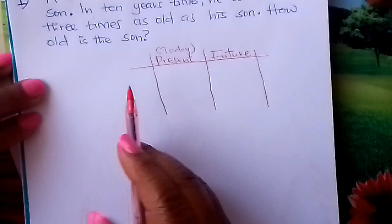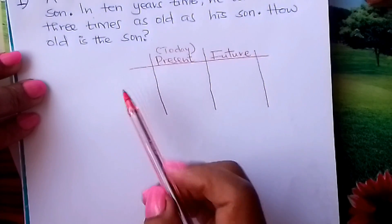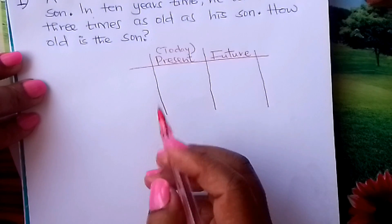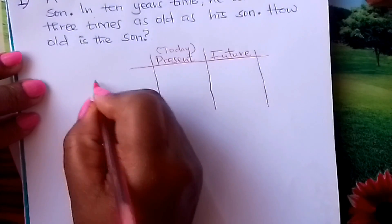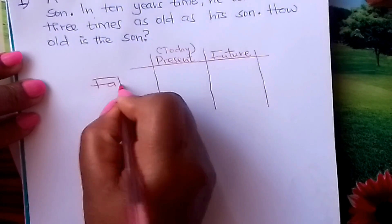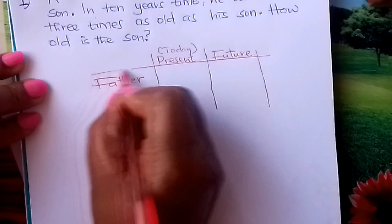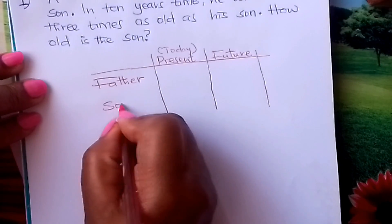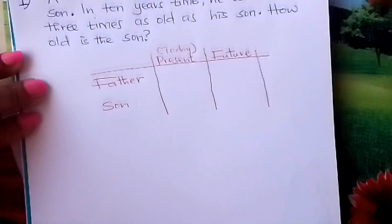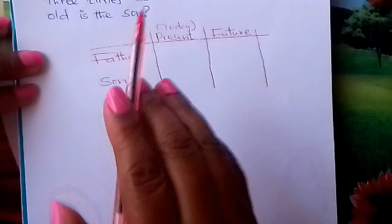We are looking at the son's age and the father's age. So you come and write here: Father. You can create another column here for father and the son. Then we go.